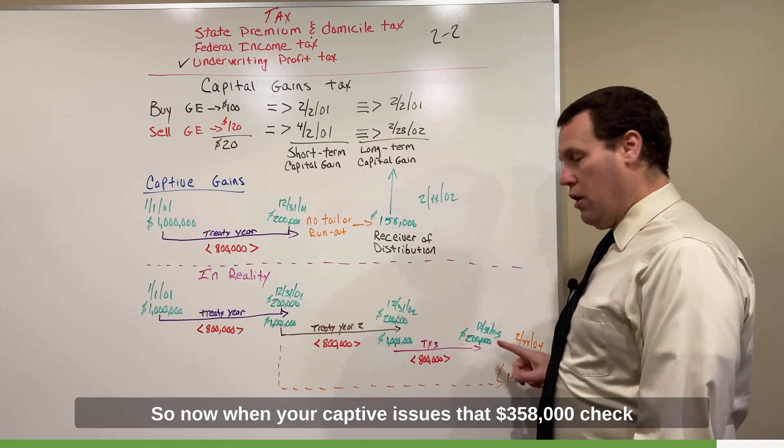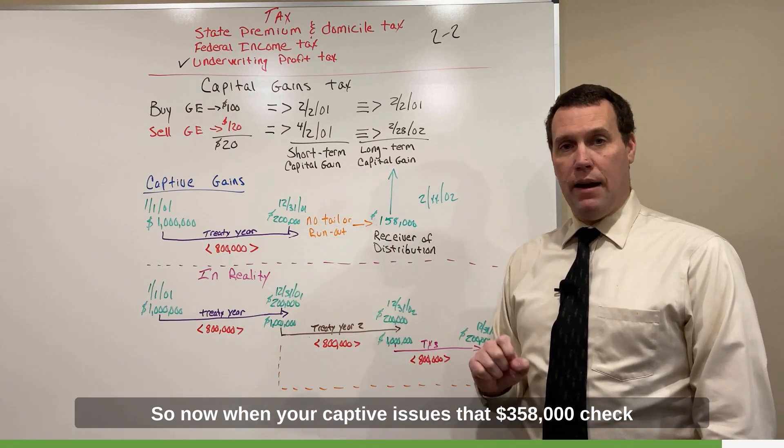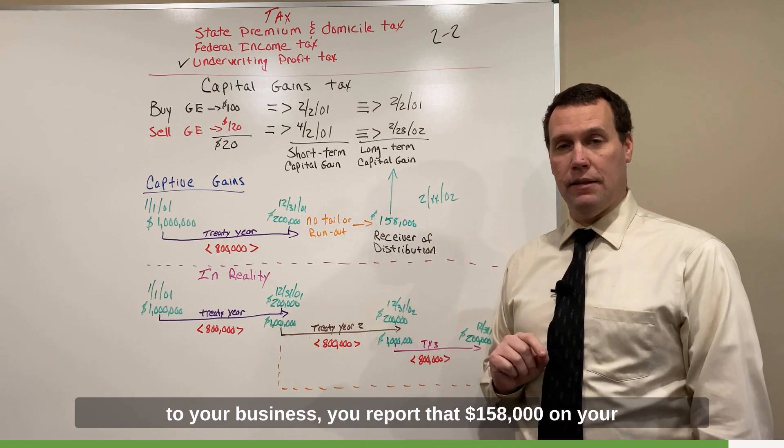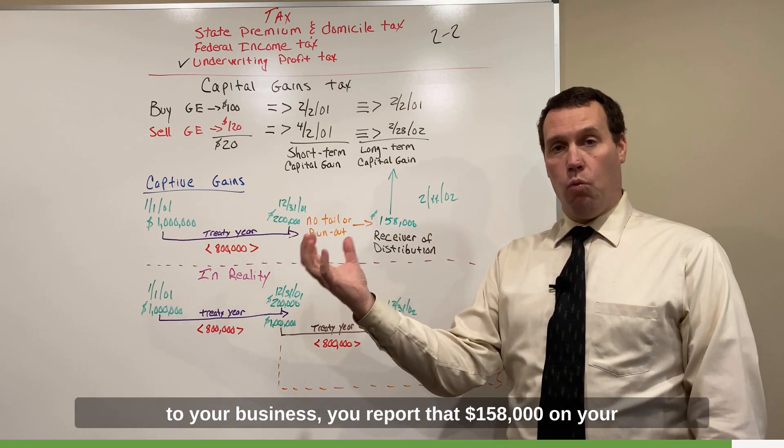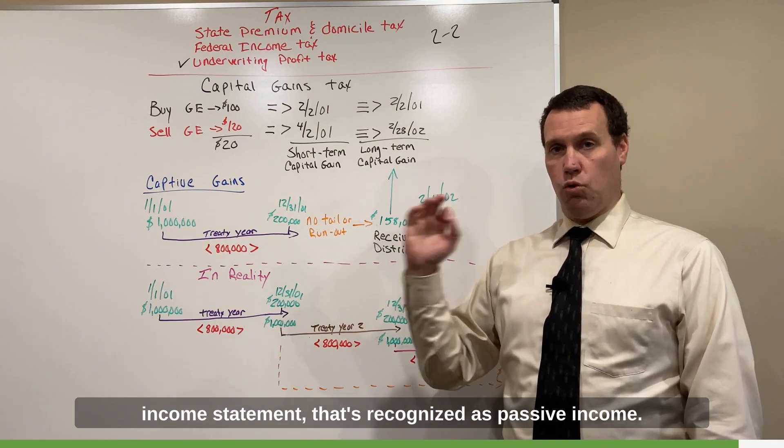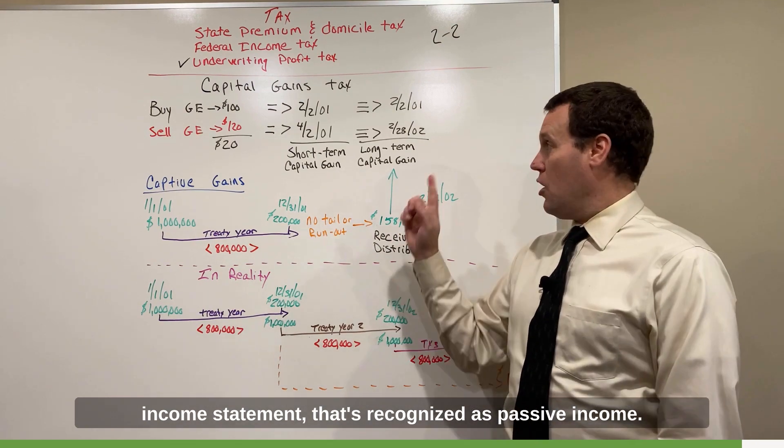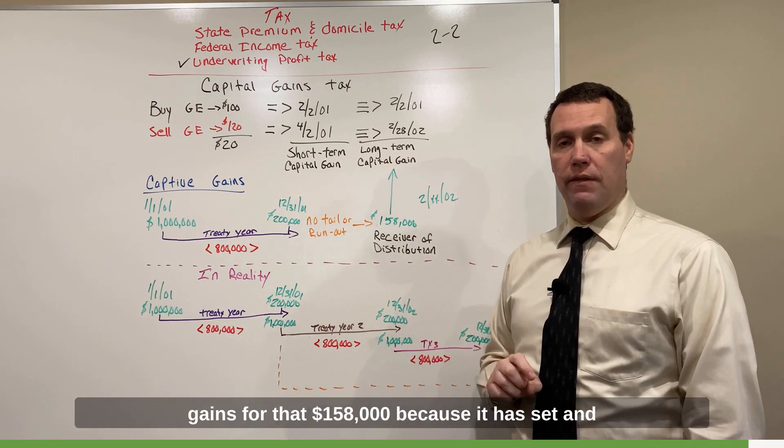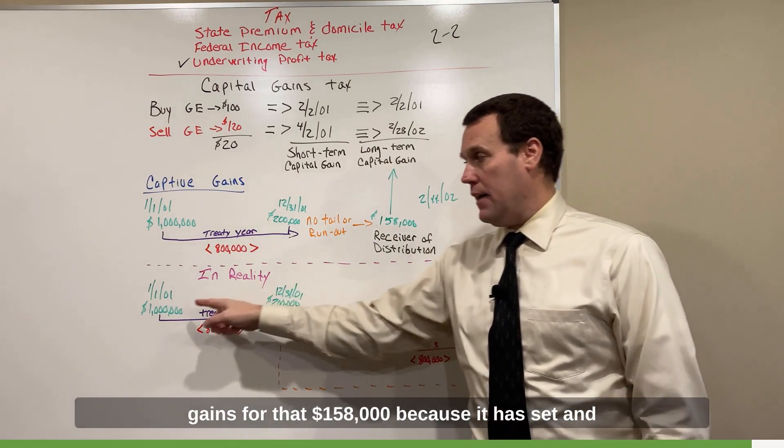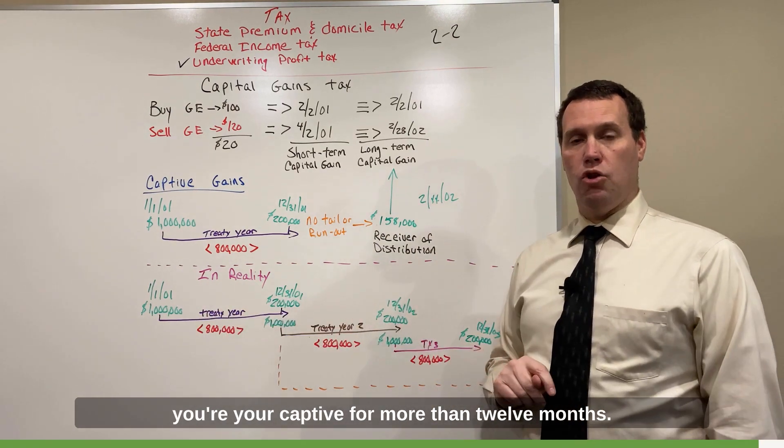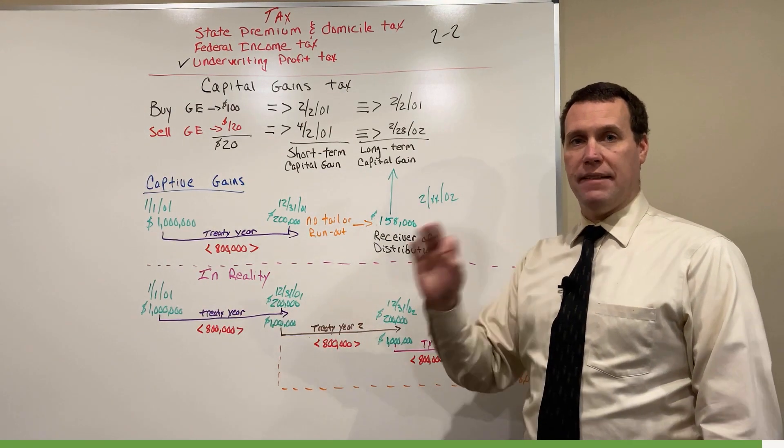Now, when your captive issues that $158,000 check to your business, you report that $158,000 on your income statement. That's recognized as passive income. You're going to be taxed that long-term capital gains for that $158,000 because it has sat in your captive for more than 12 months. That's the key.